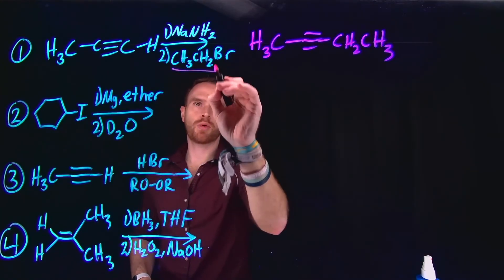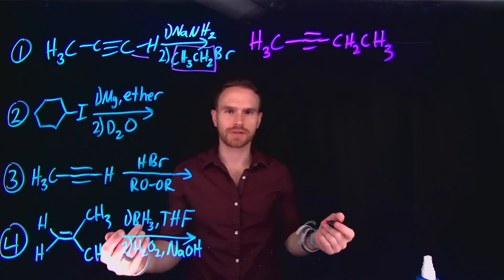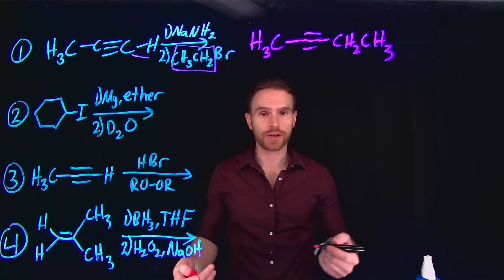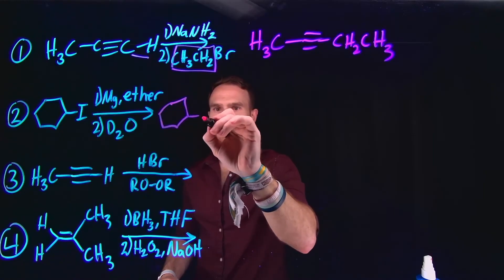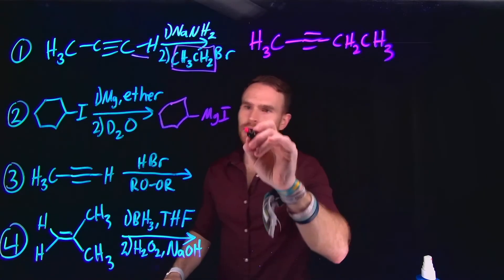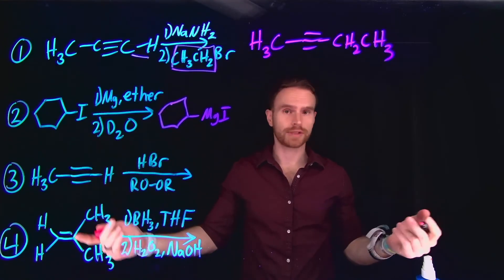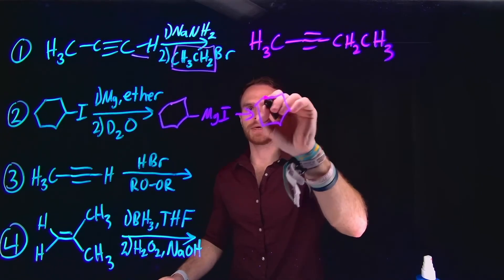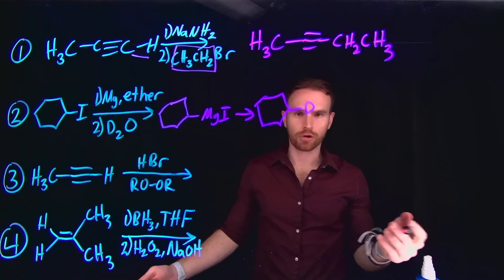This is called a substitution reaction. The next one involves forming a Grignard reagent, where the intermediate generates a magnesium iodide Grignard reagent, which is then deuterated instead of protonated using deuterated water, or D2O. Therefore, the final product is actually a way to add deuterium isotopes to different types of molecules.